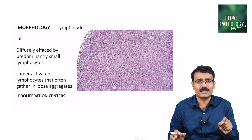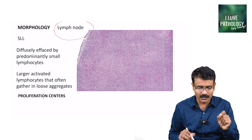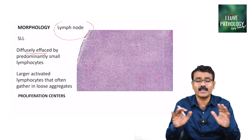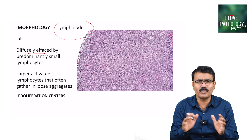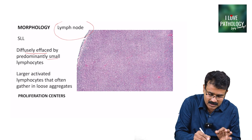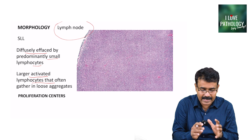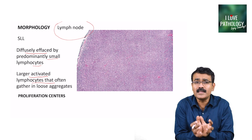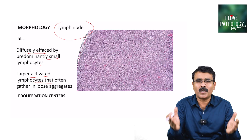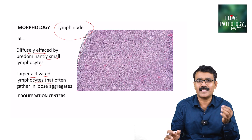If it is SLL — small lymphocytic lymphoma — when you examine the lymph node, you see diffuse effacement of the lymph node with no distinction of cortex and medulla. This diffuse effacement is predominantly by small lymphocytes. The larger activated lymphocytes often gather in loose aggregates known as proliferation centers, which is another feature found in lymph node biopsy of SLL.